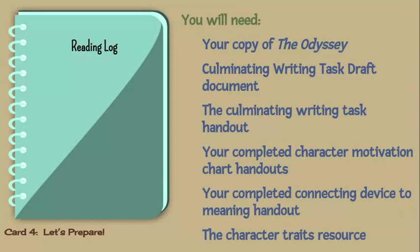For this lesson, you will need your copy of the Odyssey, your Culminating Writing Task draft document, the Culminating Writing Task handout, your completed Character Motivation Chart handouts, your completed Connecting Device to Meaning handout, and the Character Traits resource posted back in Lesson 7.